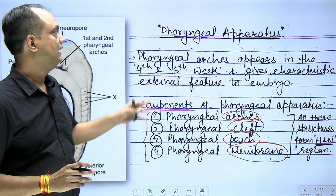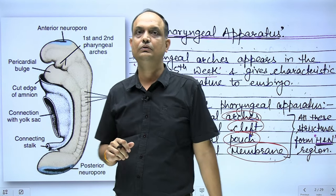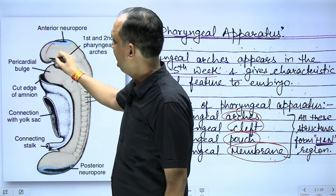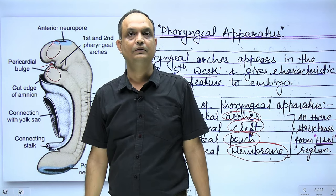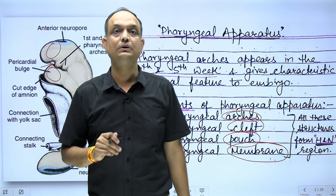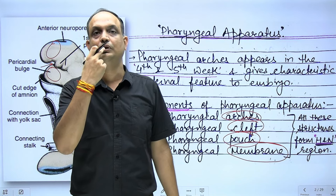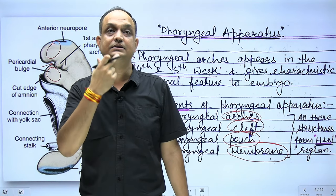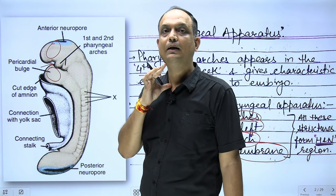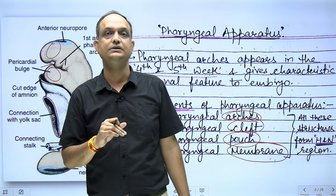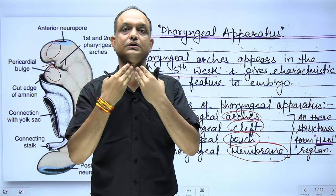All four components together form the pharyngeal apparatus. In the developing embryo, between the developing brain and the pericardial swelling, there is a surface depression known as the stomodeum, which is the future mouth. The neck region between the oral cavity and the pericardial region is formed by the pharyngeal apparatus, which lies anterior to the sternocleidomastoid.